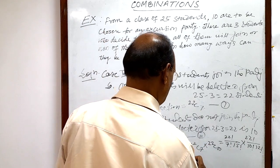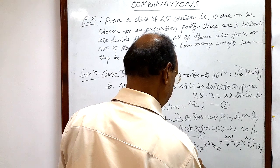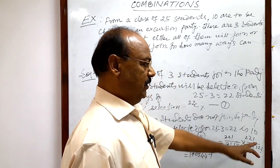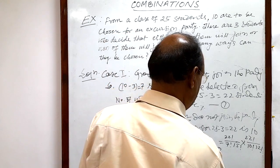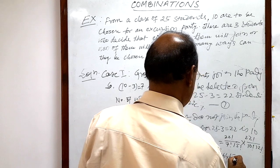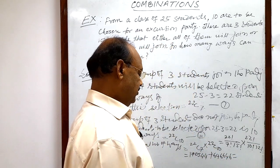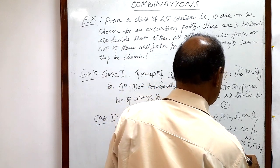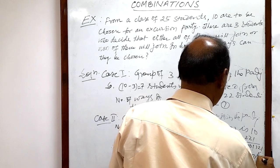By calculating the first expression we get 170544, and from the second expression we get 646646. By adding these two numbers the result is 817190. This is the final answer.